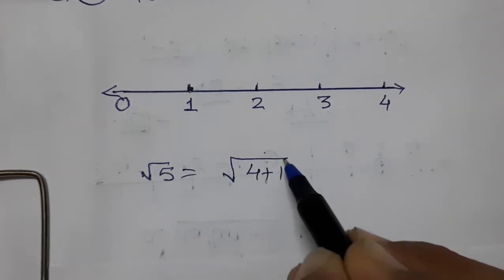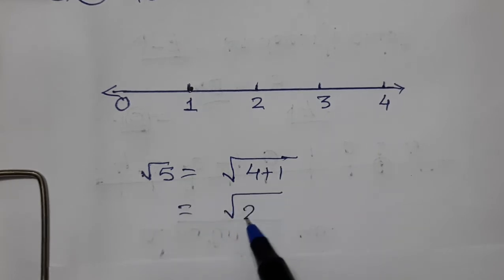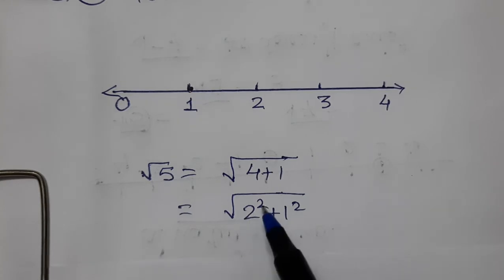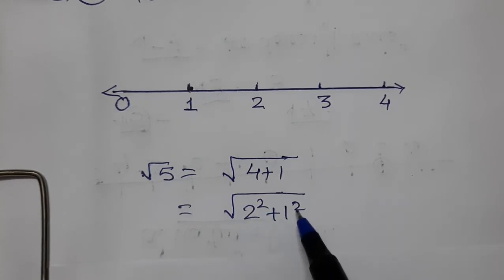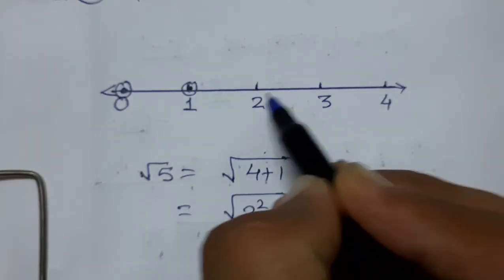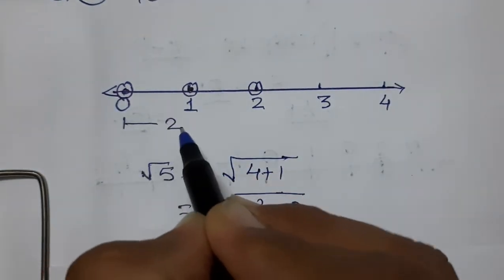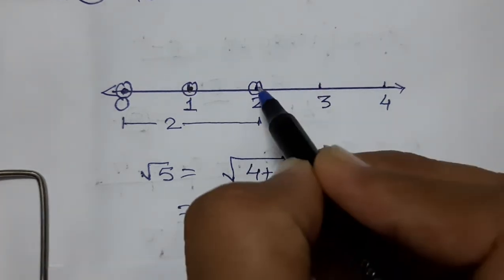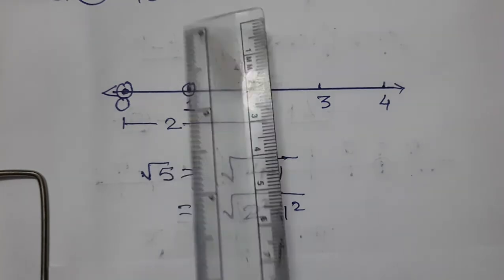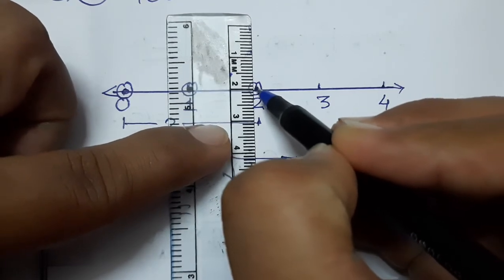√5 means √(4+1) = √(2² + 1²). So we need 2 units and 1 unit. Here is 0, here is 1, here is 2. We take from 0 to 2 — that is 2 units. Then at this point we drop a perpendicular of 1 unit.